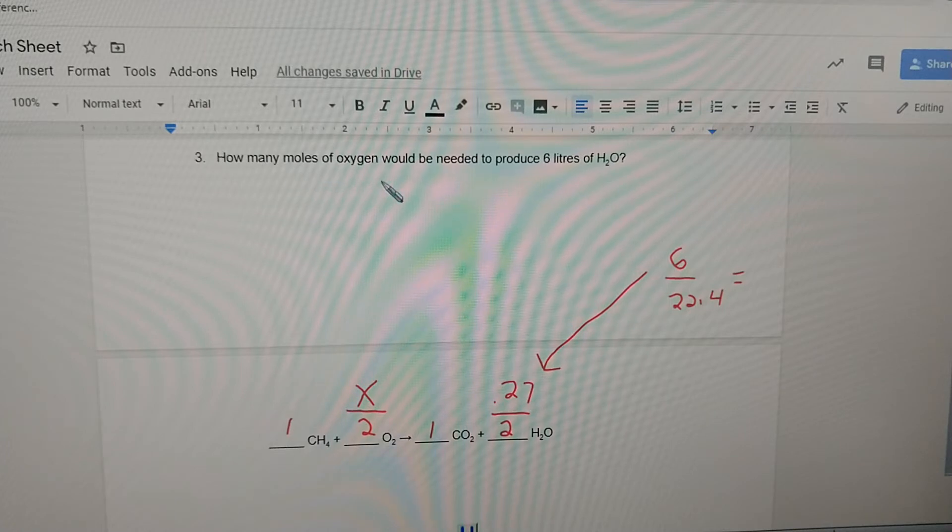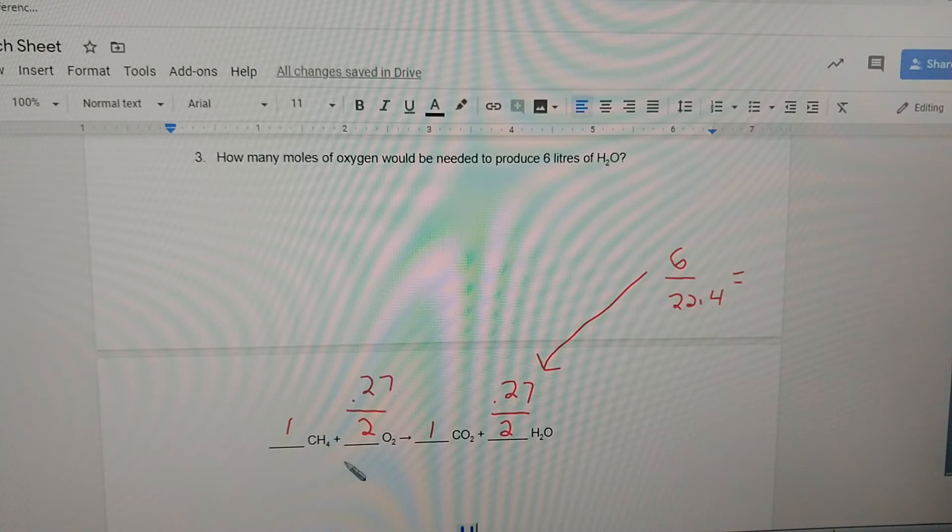Now how many moles of oxygen would be needed to produce six liters of water? Six liters of water is 0.27 moles. 0.27 is to two as x is to one. 0.27, that's right.